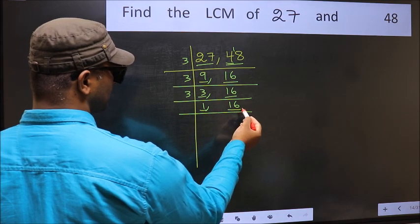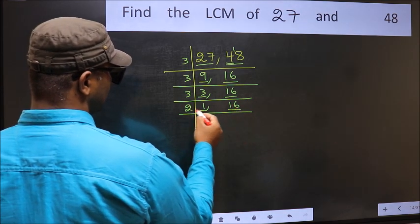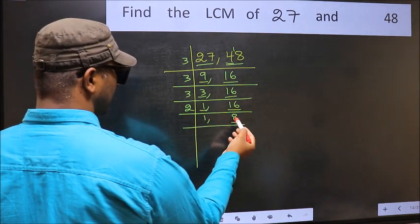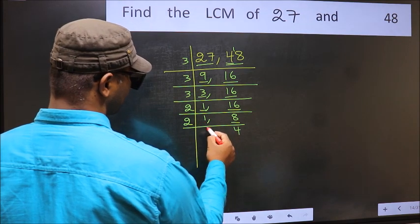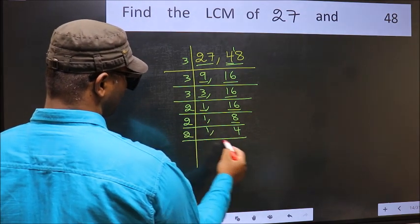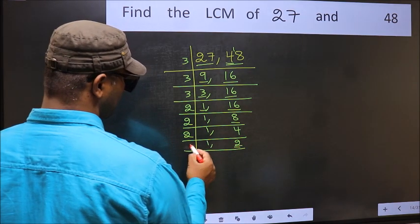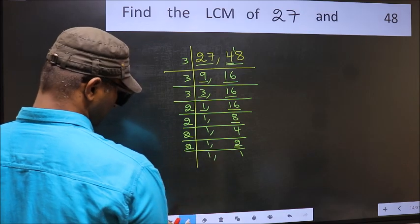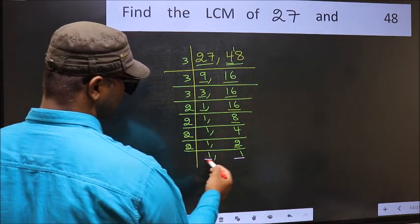So focus on the next number, 16. 16 is 2 eights 16. Now we have 8, and 8 is 2 fours 8. Then 4 is 2 twos 4. Now we have 2, and 2 is a prime number, so 2 once 2. We got 1 in both places.